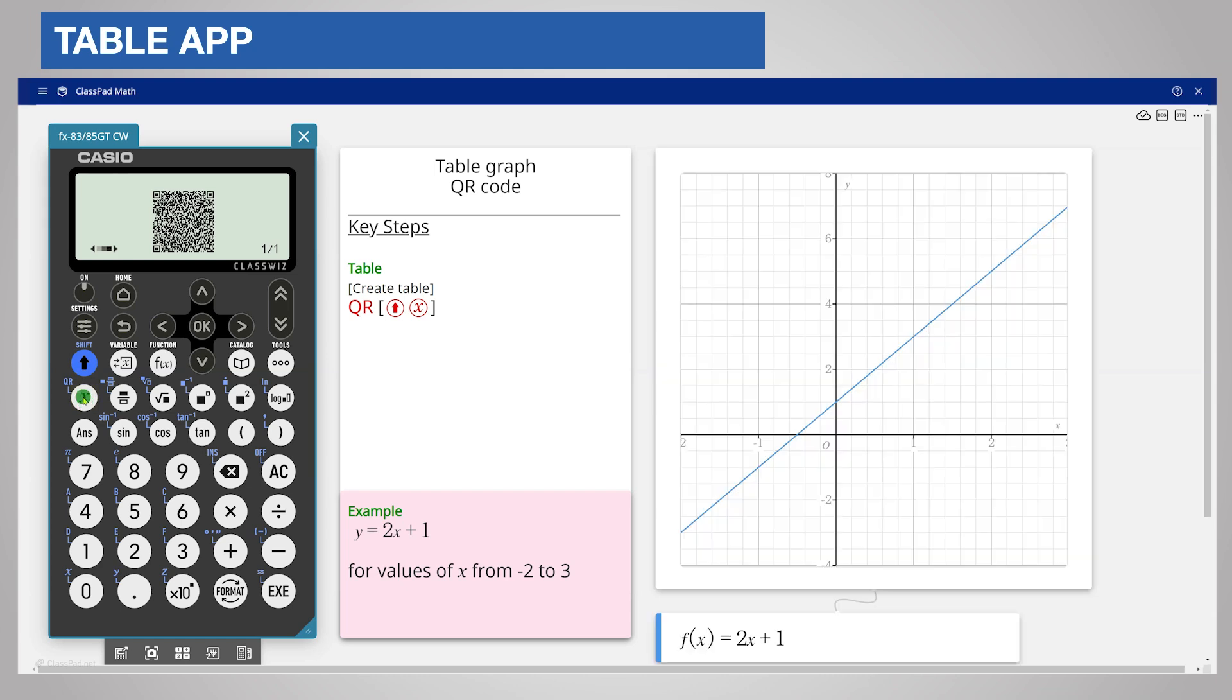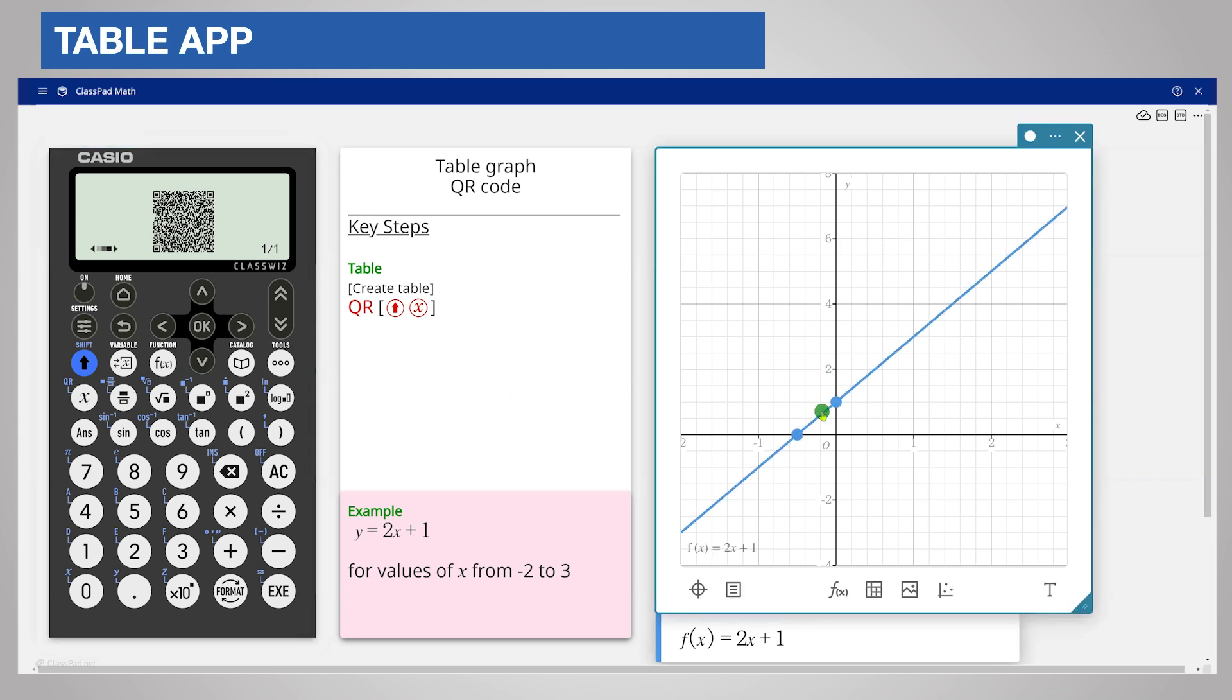The link takes you to classpad.net and the graph will display as here on the right. If you click on the graph, the key points are shown, in this case the intersection with the axes.